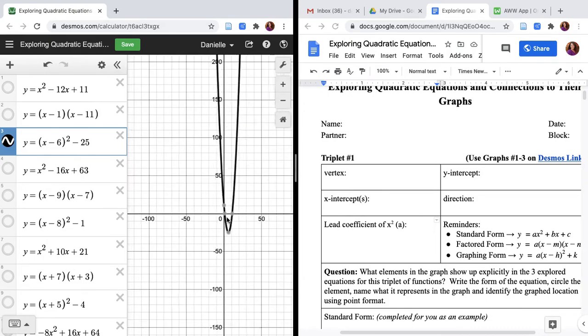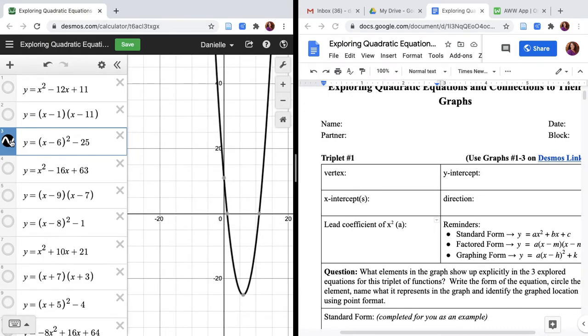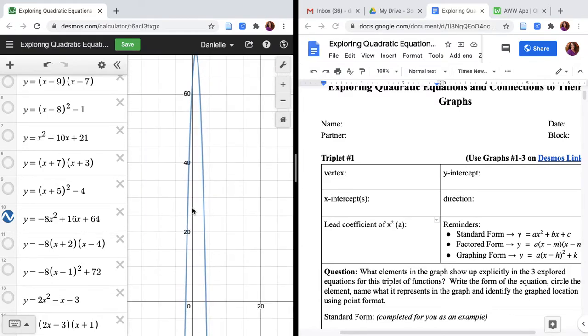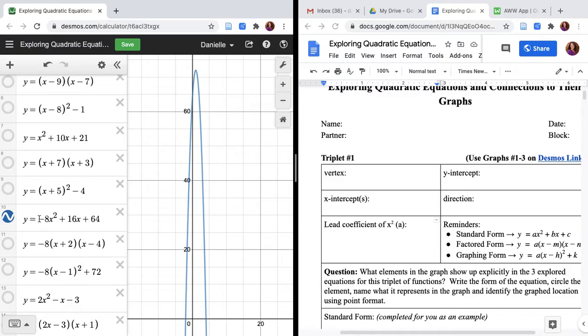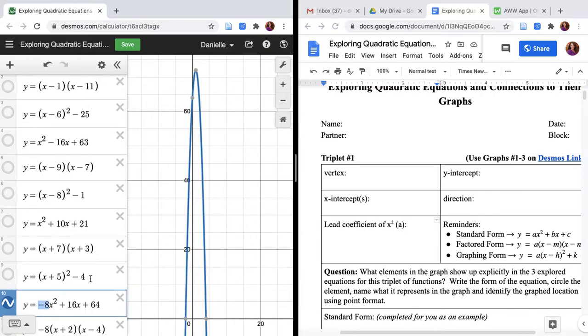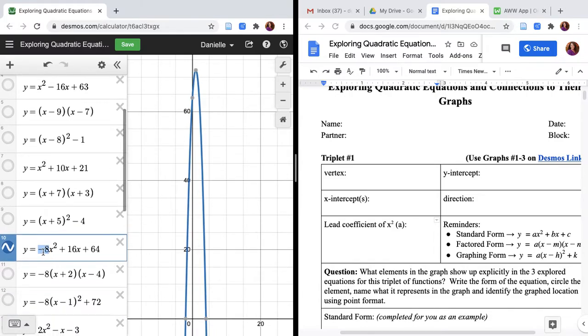As you scroll down, we start to see some changes. Here, this parabola faces down and is much more stretched out—that's because of the a term, this negative eight right here. If we look above, they were all positives at the start of these equations, and they were all parabolas that faced up. So the other takeaway is that if the lead coefficient is positive, the parabola opens upward; if the lead coefficient is negative, the parabola will open downward.